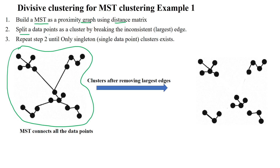Then we have to split this entire cluster into sub-clusters based upon selecting the largest cost edge. The largest cost edge will be removed first. You look at this — this is the largest edge cost. So we are removing these four edges which have the largest weight, and after removing them we got sub-clusters — five clusters.